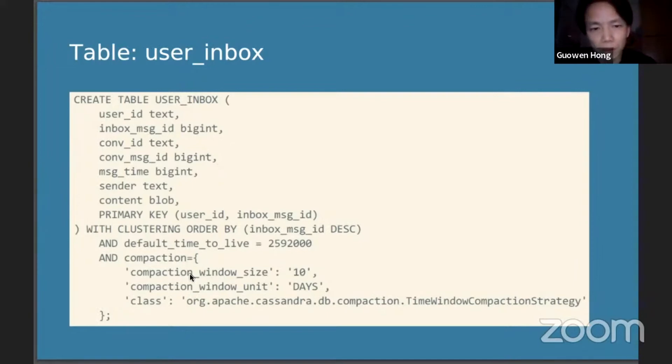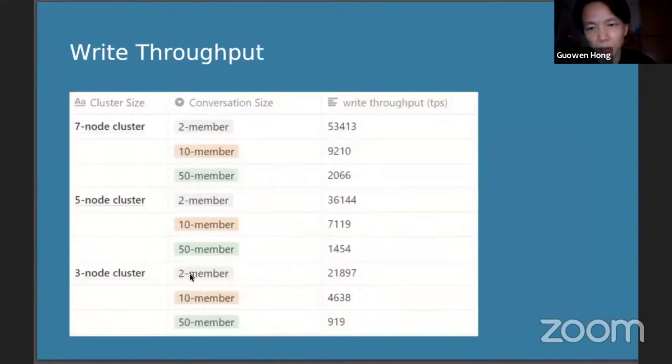So we use a time window compaction strategy and let the data expire after a period of time to prevent the data from growing too fast.